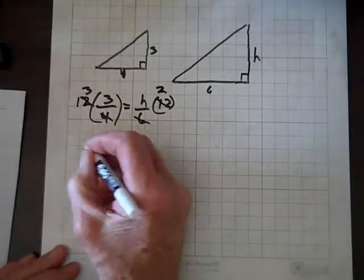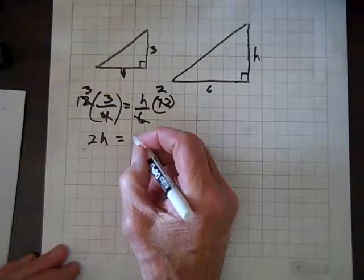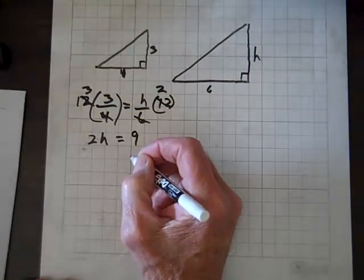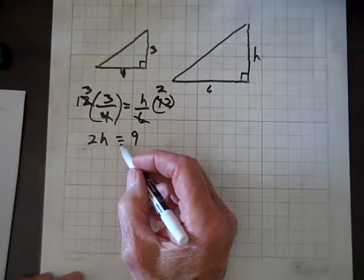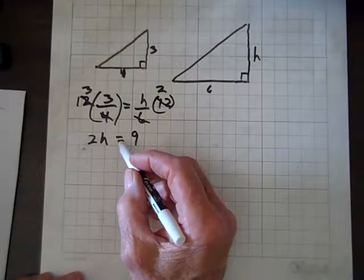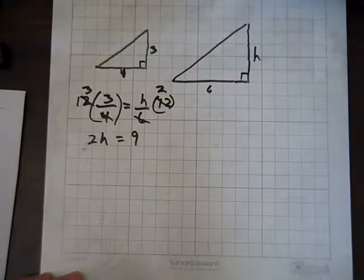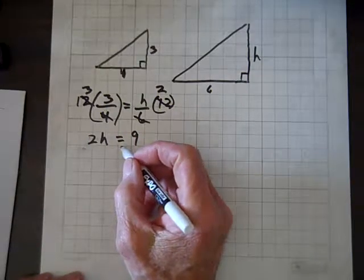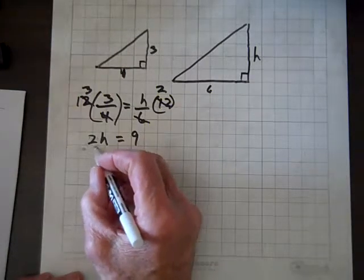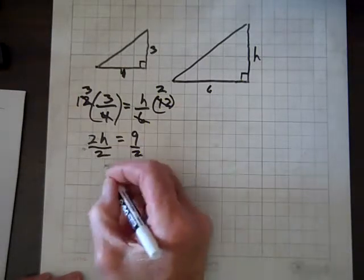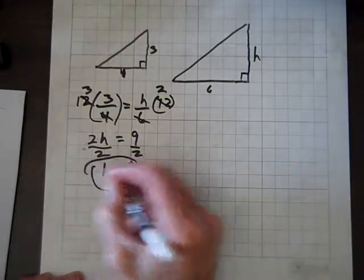So now I'm going to reverse position, so I have 2H equals 3 times 3 is 9. And you can say, well, why did you reverse positions? Well, if you look at book solutions, you'll always see the variables on the left and the values on the right. And so it's in our comfort zone, and so we can switch positions. Now we'll divide both sides by 2, and we get H equals 9 halves. And there's our solution.